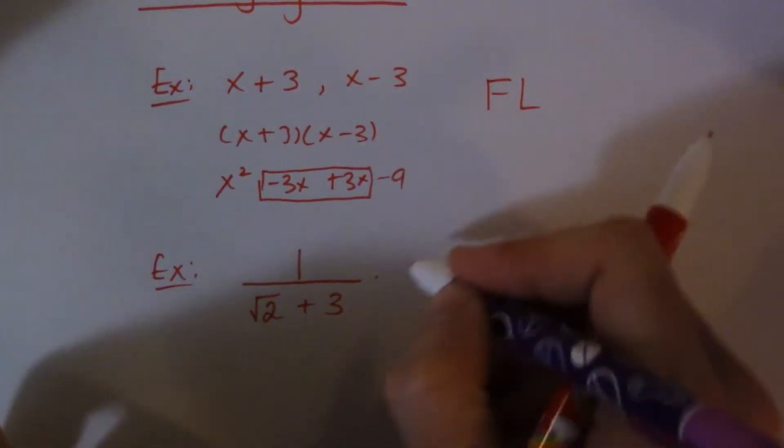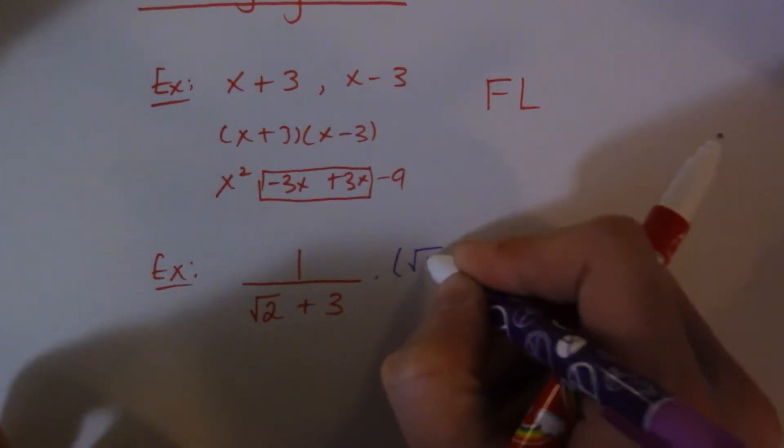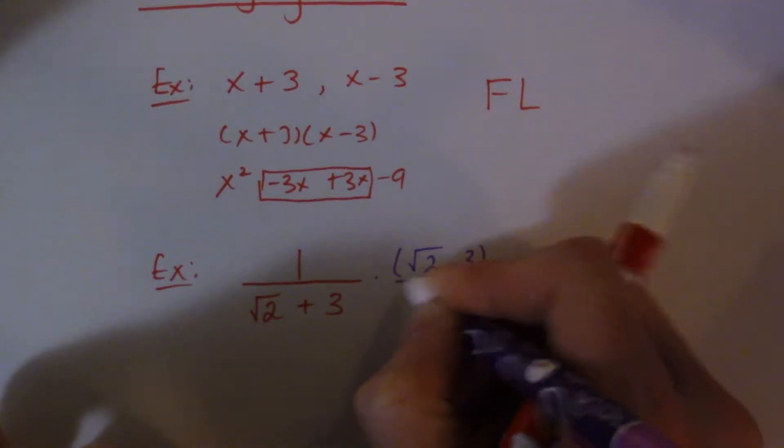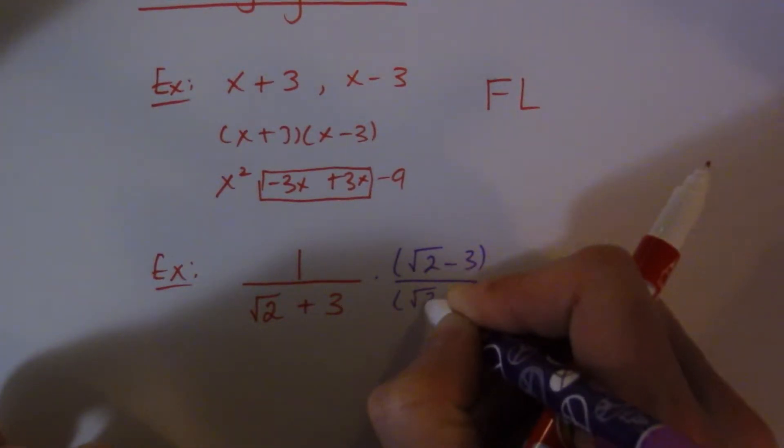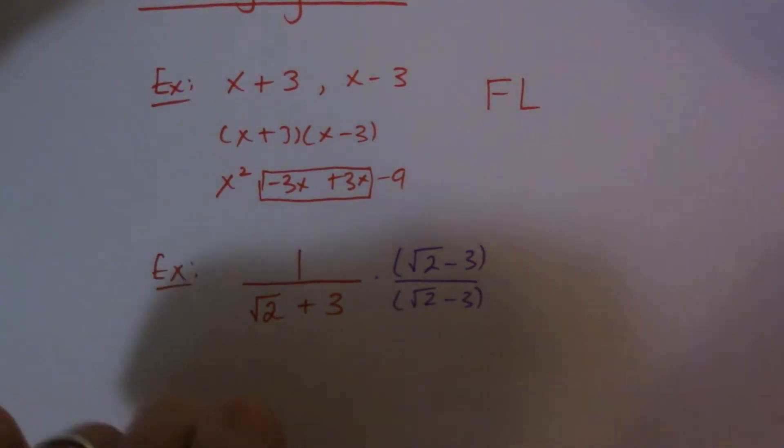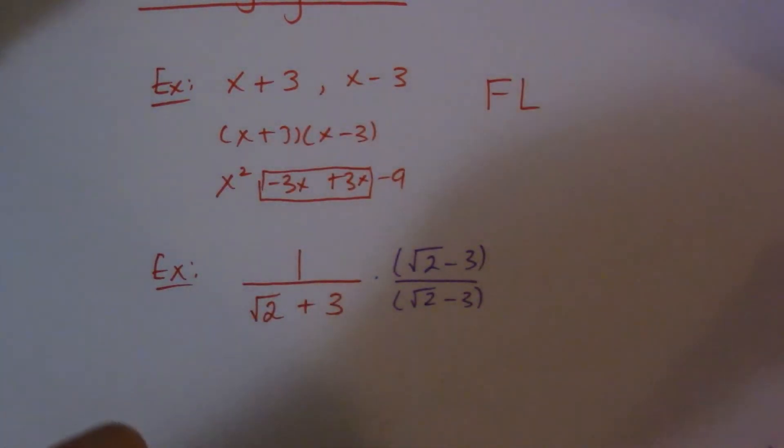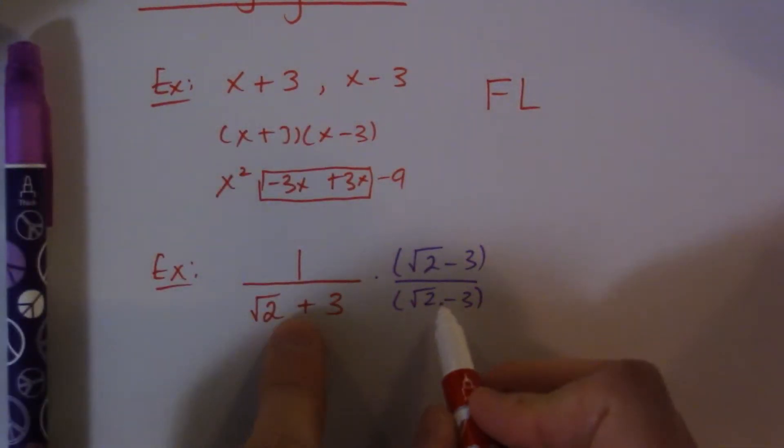So what we would do is we would multiply the top and bottom of this thing by the conjugate. Just like that. So if I multiply the top and bottom by the conjugate, all I did was change the signs in between.